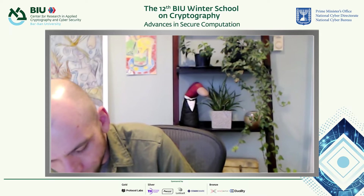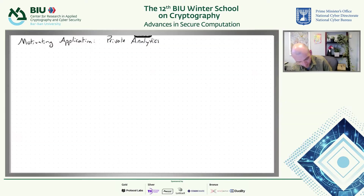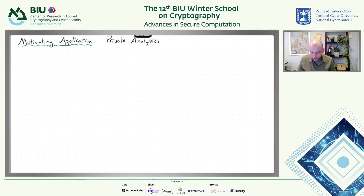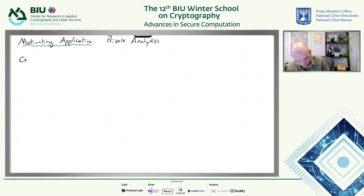This has a bunch of names — sometimes called private aggregation, sometimes private analytics, and the PRIO system is kind of an instantiation of this. It's an idea that's been around for so long in so many different forms, certainly going back to the 80s. Let me give you the problem, then the simple way to solve it, and why the simple way is not sufficient.